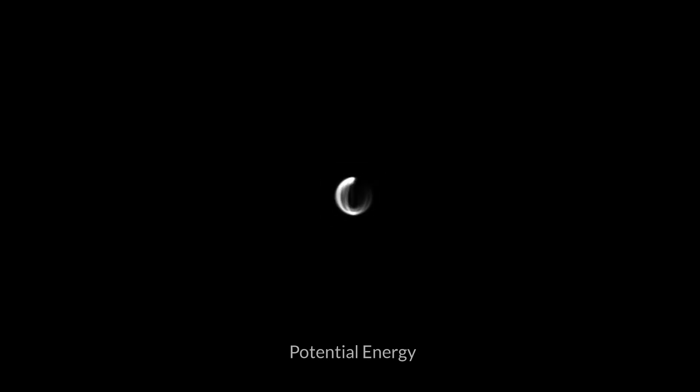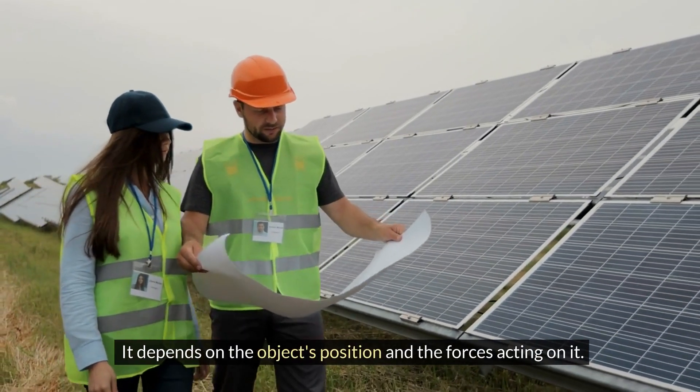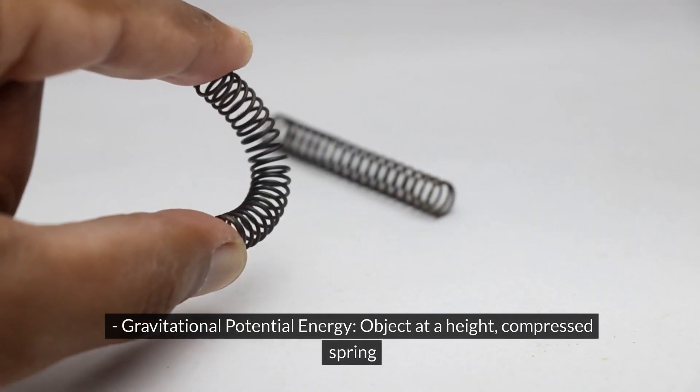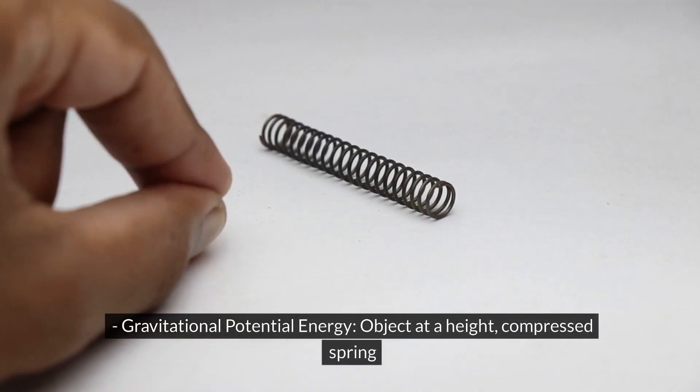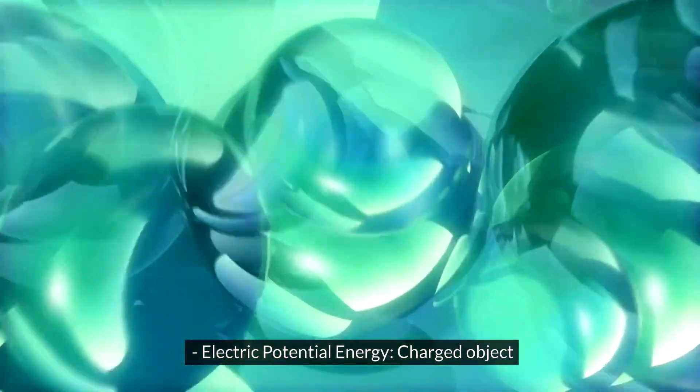Potential energy: energy associated with the position of an object. It depends on the object's position and the forces acting on it. Examples: gravitational potential energy (object at a height, compressed spring), elastic potential energy (stretched rubber band, compressed spring), electric potential energy (charged object).